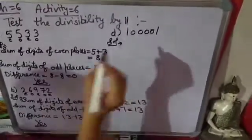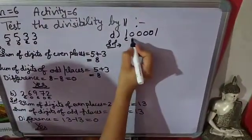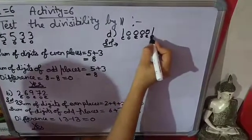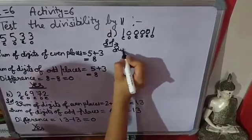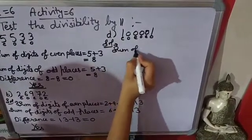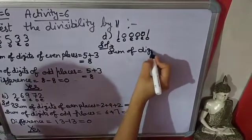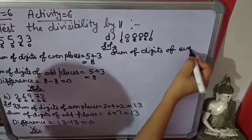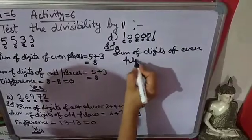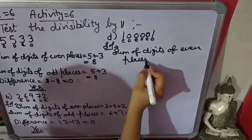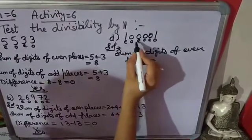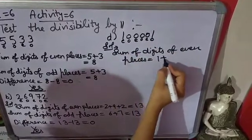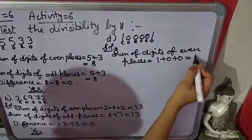D part: label positions even, odd, even, odd, even, odd. The sum of digits at even places: digits are 1, 0, 0, and 0, which gives 1.